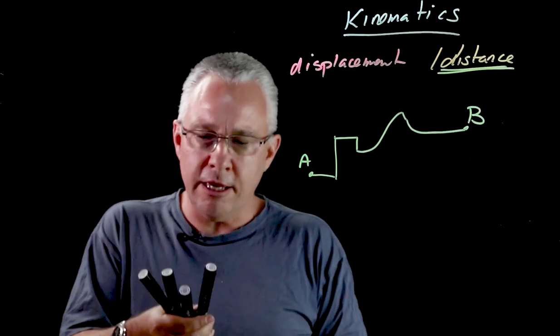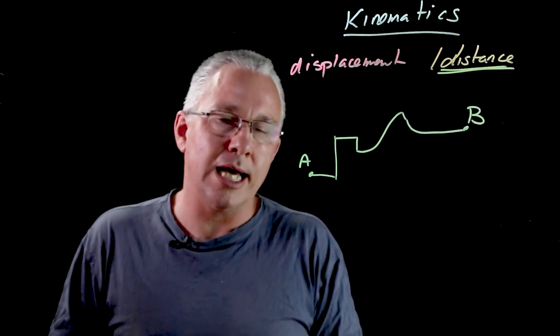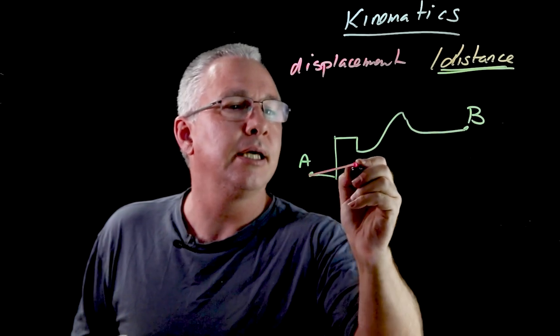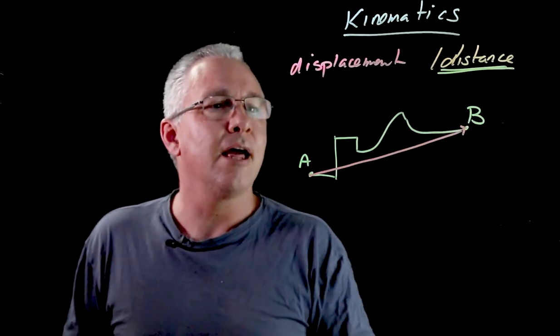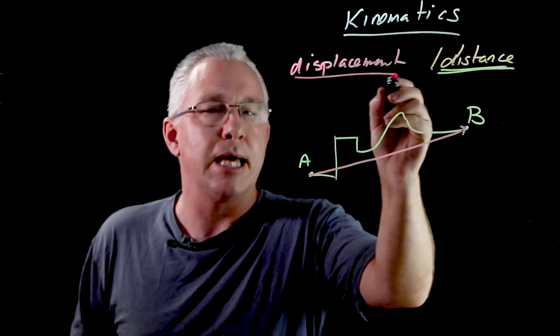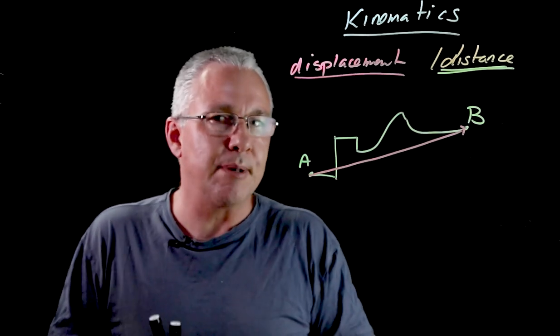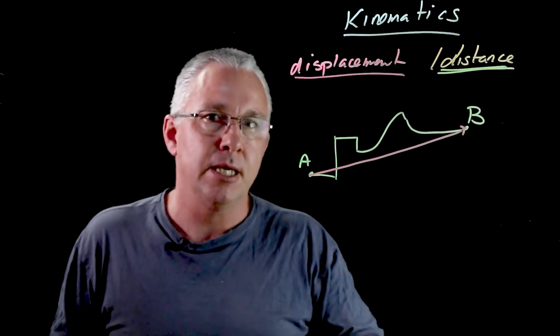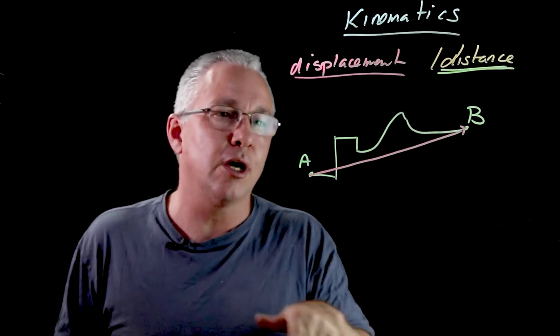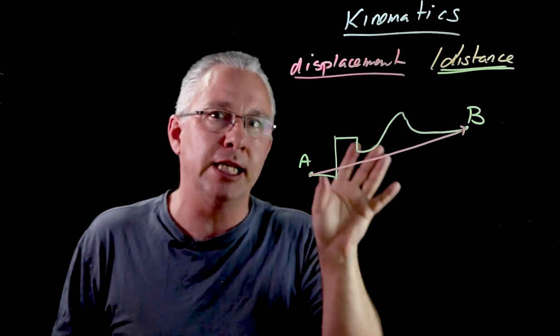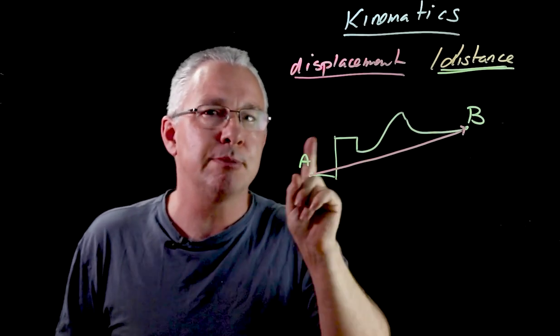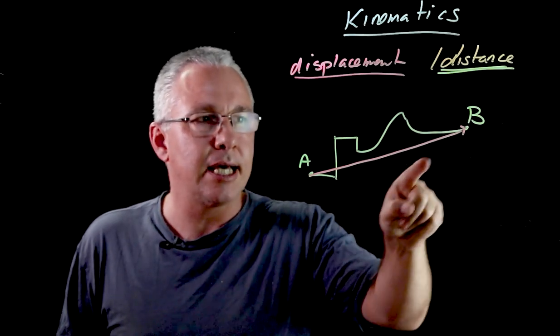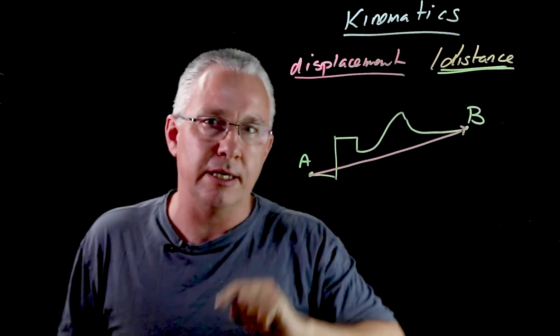However if I were to look at the straight line path that is from point A to point B in a straight line like so, that is our displacement. So you can see that displacement is actually the shortest path between the two points. Distance can be any path. In fact you can go around and around and have a really long distance but your displacement is always going to be the same.